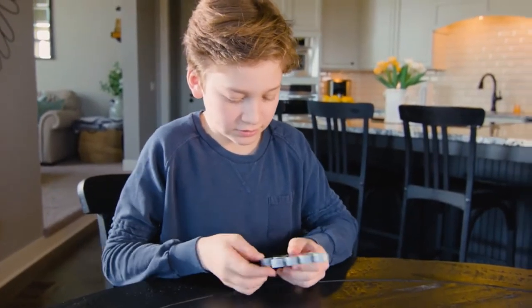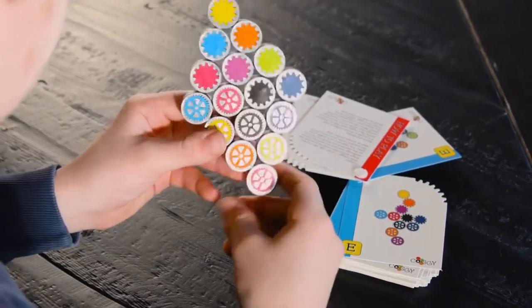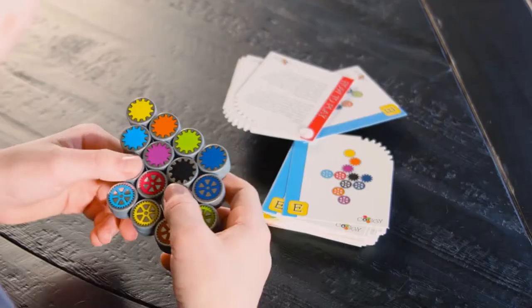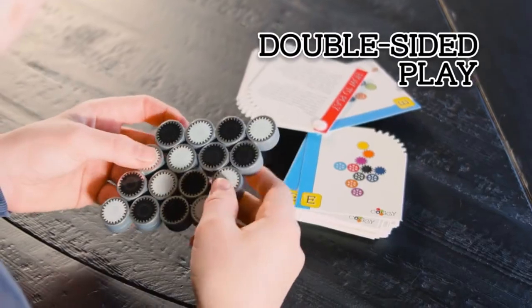Use trial and error to fill in the blanks in the combination. If the color challenges don't make you throw a cog, flip Coggy over for a black and white challenge.